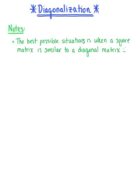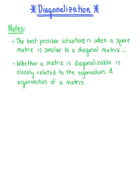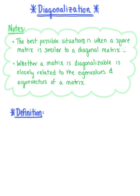Here we begin our exploration of the idea of diagonalization. One of the best possible situations that can occur when working with similar matrices is when a square matrix is similar to a diagonal matrix. And as we will see shortly, whether a matrix is diagonalizable is closely related to the ideas of eigenvalues and eigenvectors of a matrix. So let's begin by thinking about the definition of diagonalization.